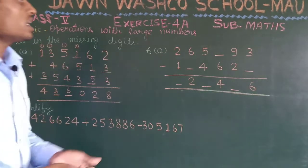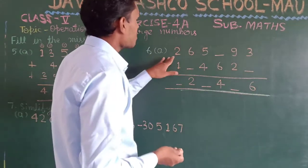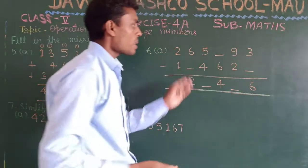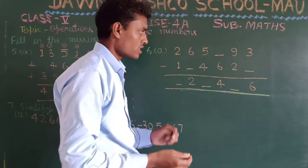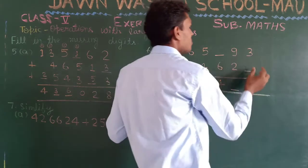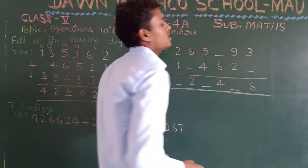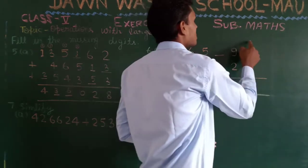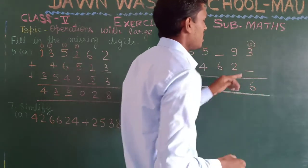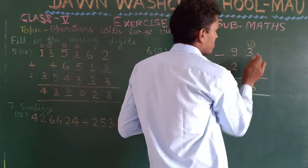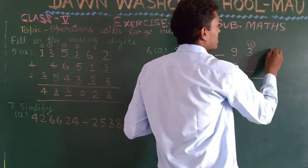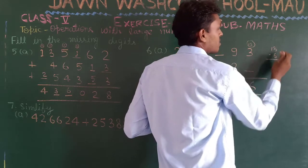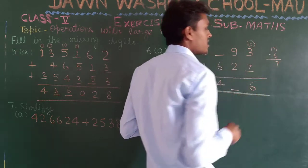The next question is 6a — a subtraction type question. We have to perform subtraction and find the missing numbers. In the ones column, from 3 we subtract to get 6 — that is not possible since 3 is less, so we borrow from the next column making it 13. We subtract 6 from 13 and get 7, so we write 7 here.